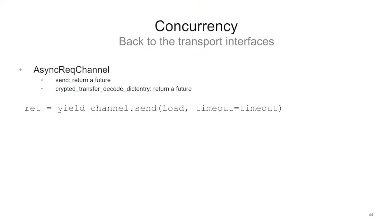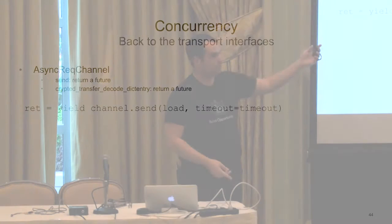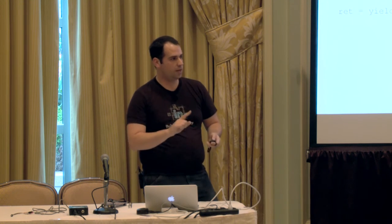Going back to the transport interfaces — the rec channel — when you call send or cryptid transfer decode dict entry, they don't actually do the send right then. What they do is return a future which will complete when it's sent or times out. You can then decide whether you want to yield on it, or just let it go and eventually finish whenever it finishes. It's up to the caller to decide whether to wait on it or not.